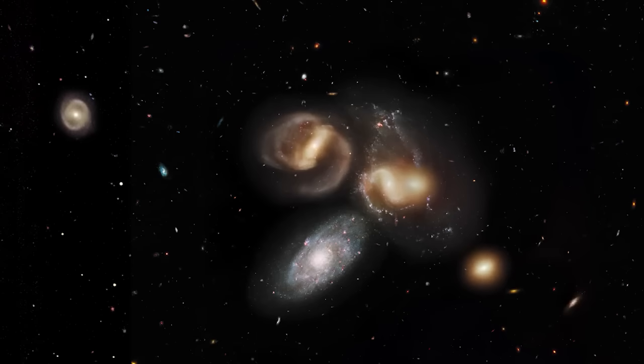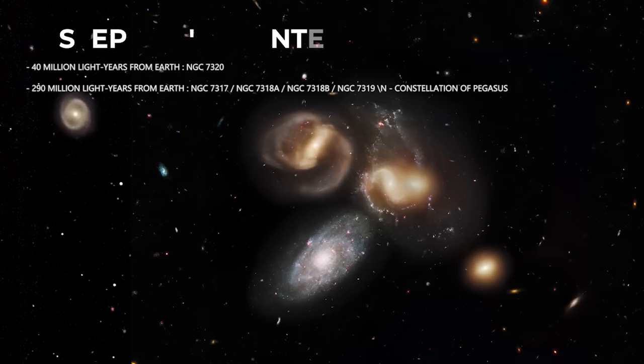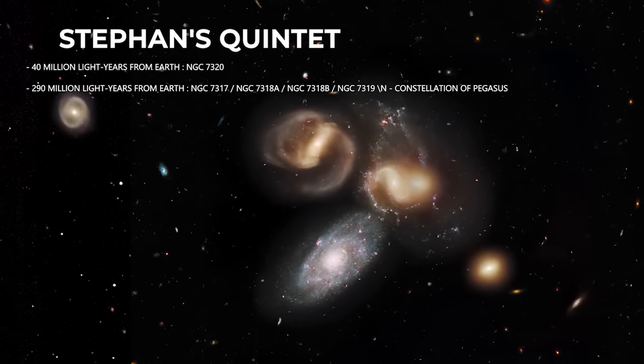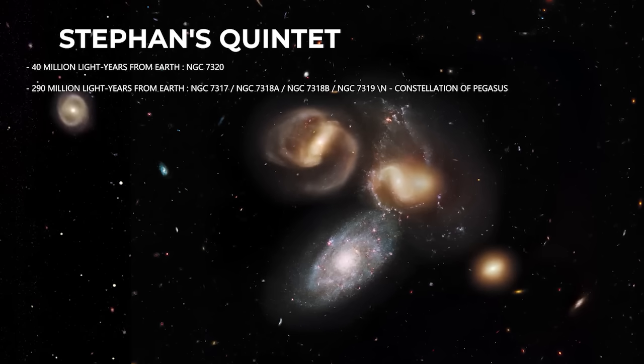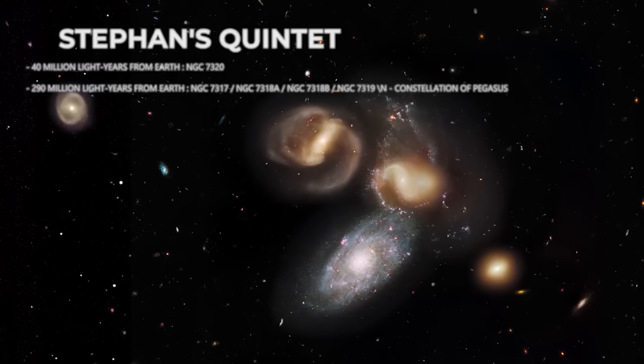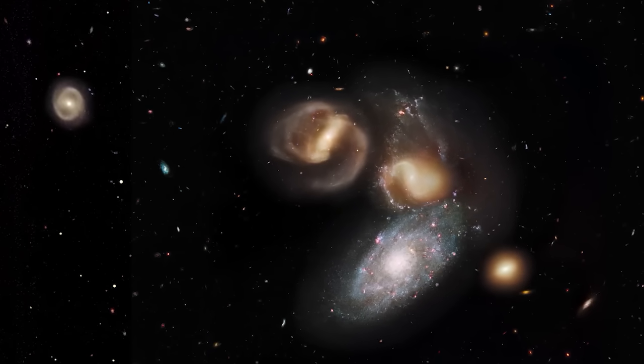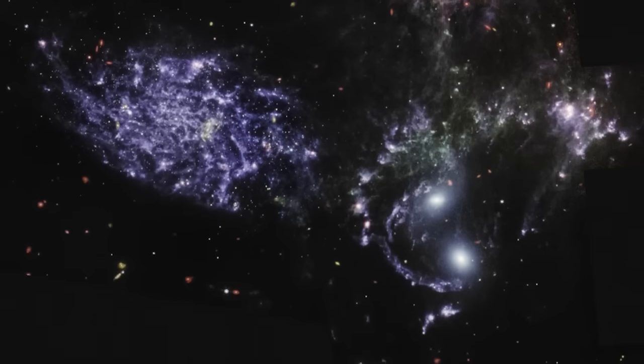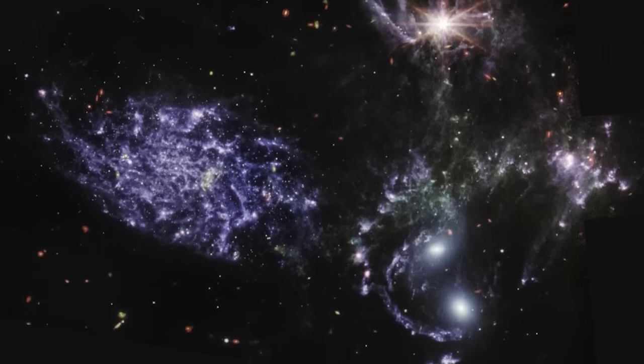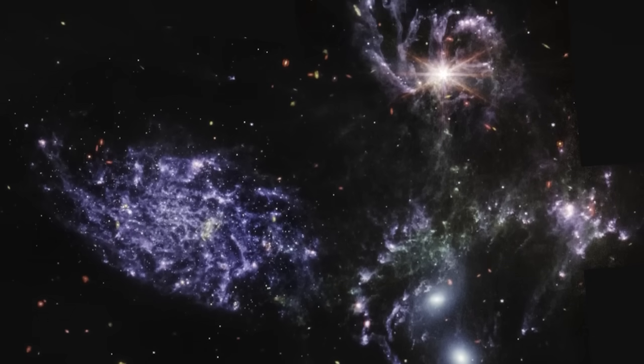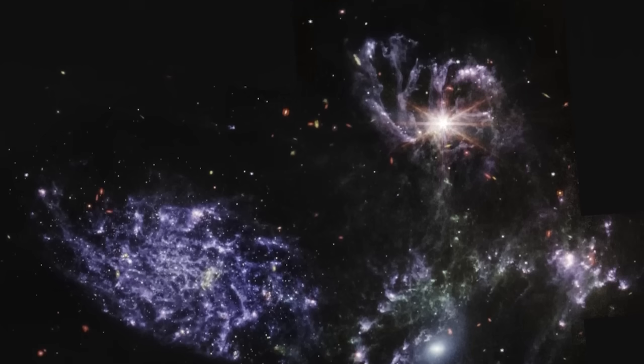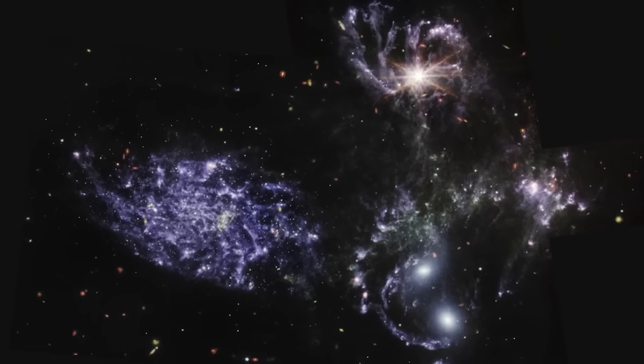One of the first images from the James Webb Telescope to be released is that of Stephan's Quintet, a group of five galaxies located in the Pegasus constellation, and discovered in 1877, thanks to the telescope of the Marseille Observatory. In this group of galaxies, only four out of five are gravitationally associated.